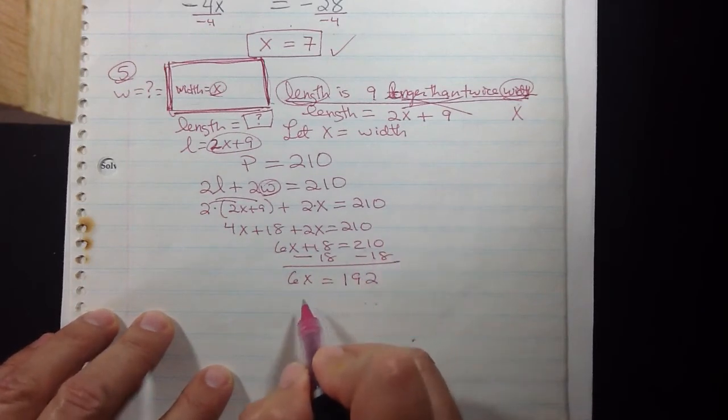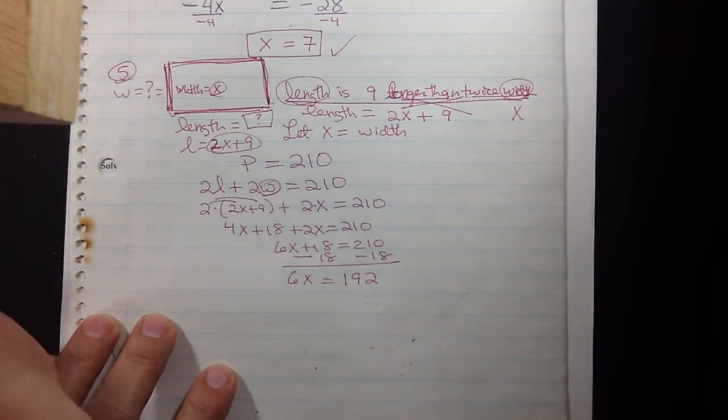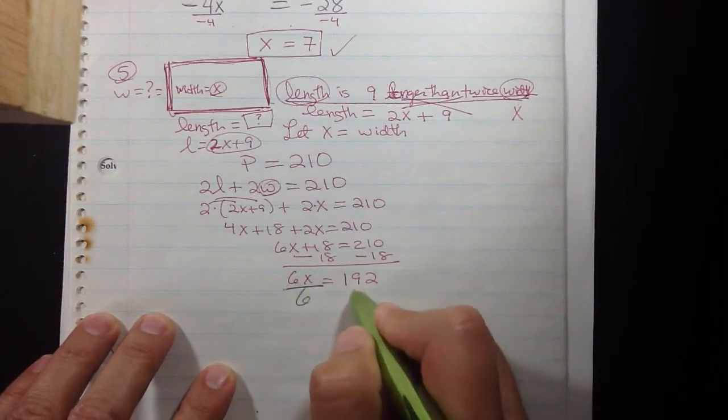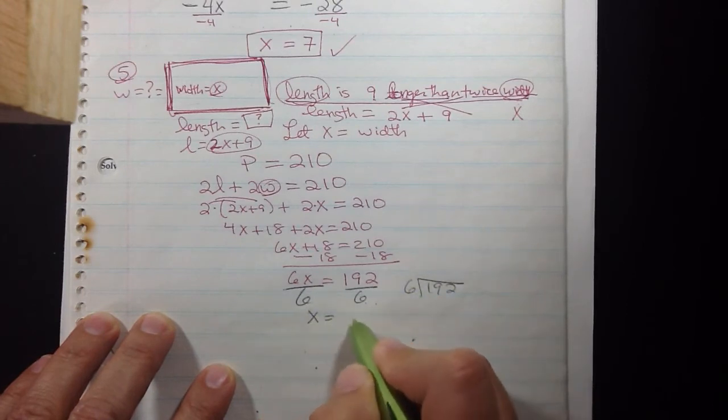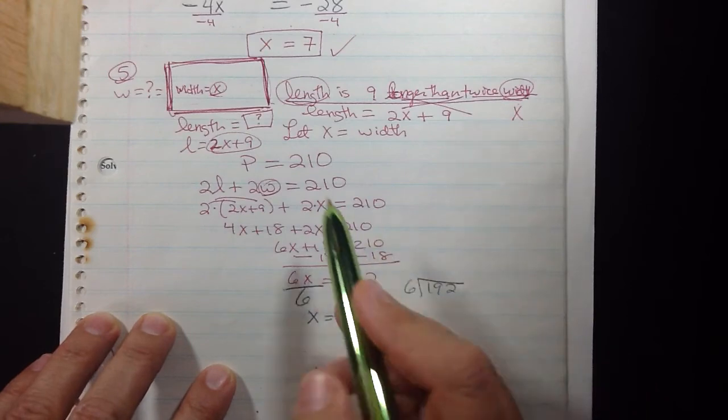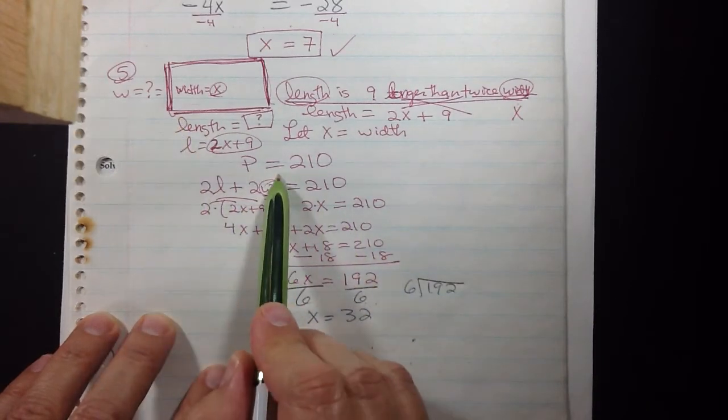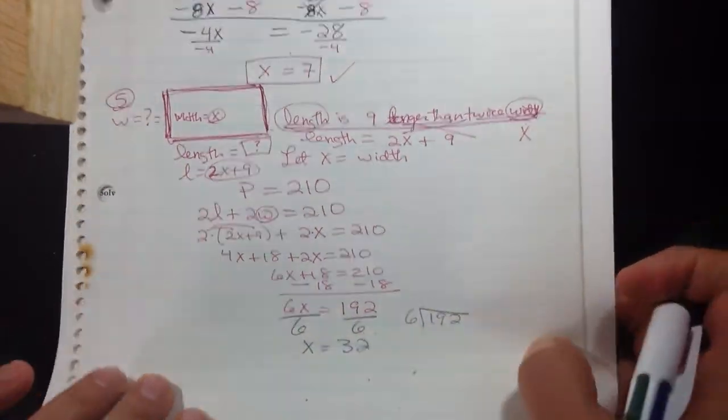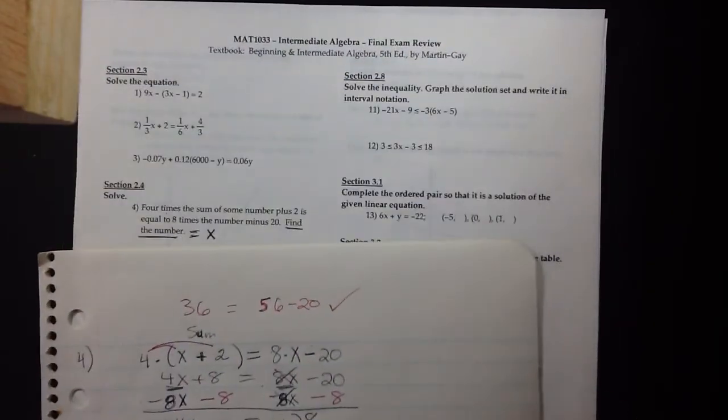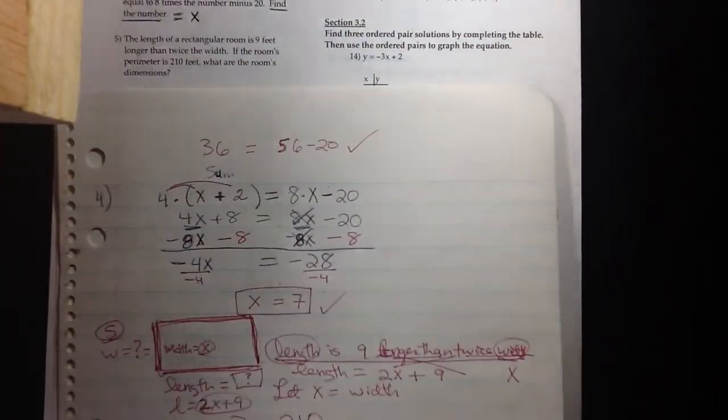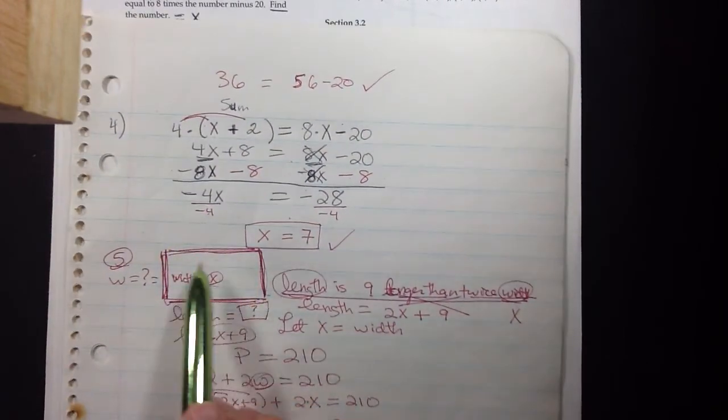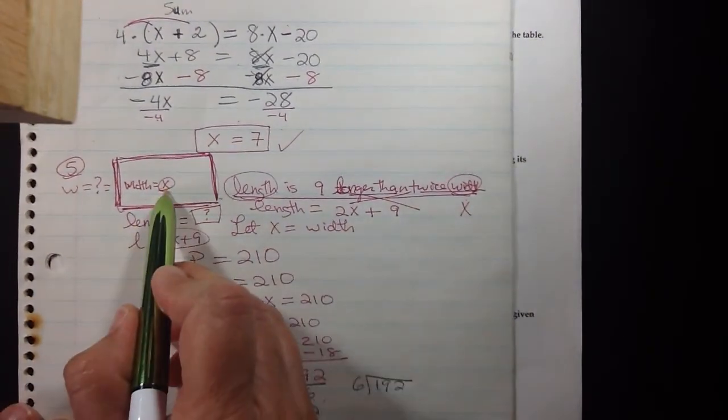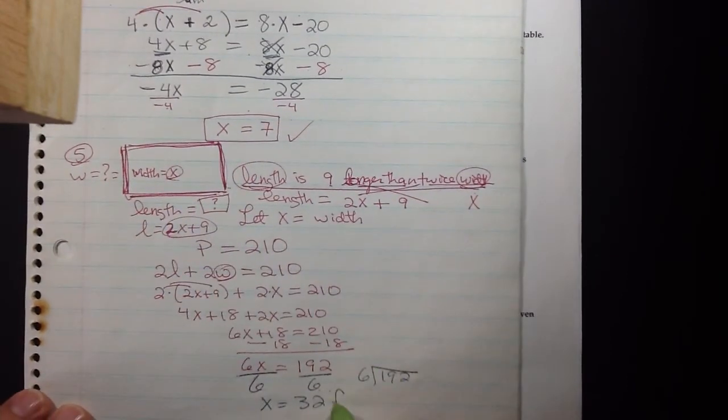And finally divide by 6. So that 192 divide by 6, and you can just use your calculators for this. It's going to be 32, and the units here, since the perimeter was given to us in feet, then we know we have to use feet for our units. So 32 is our X, 32 feet is our width.